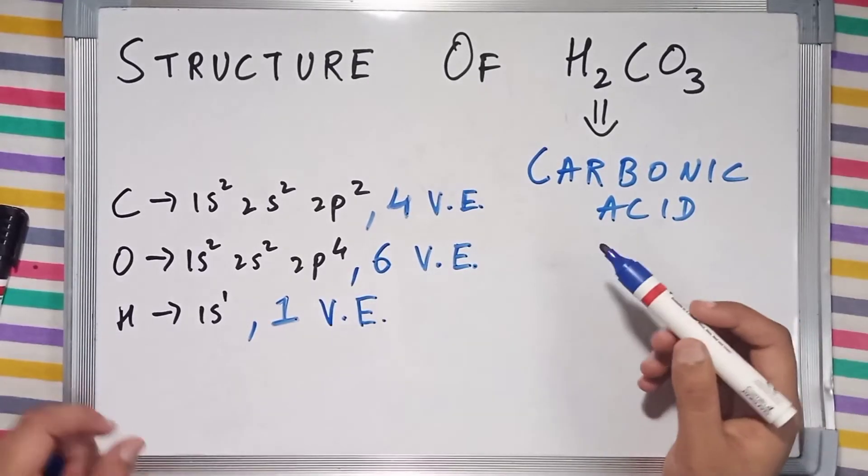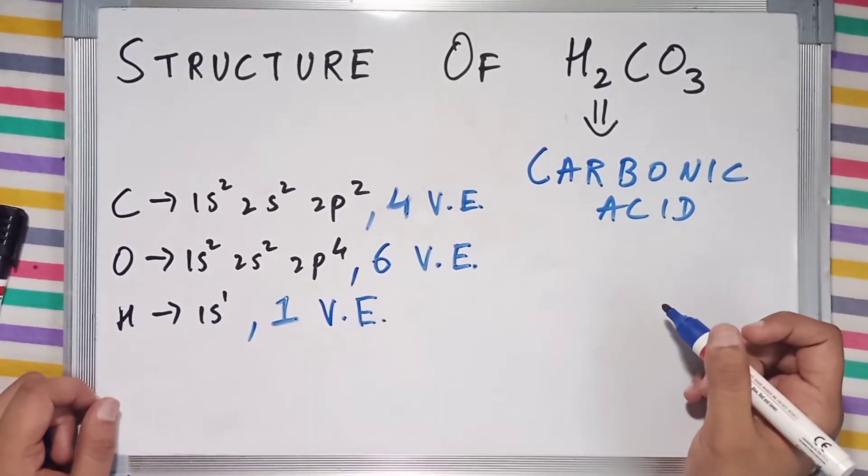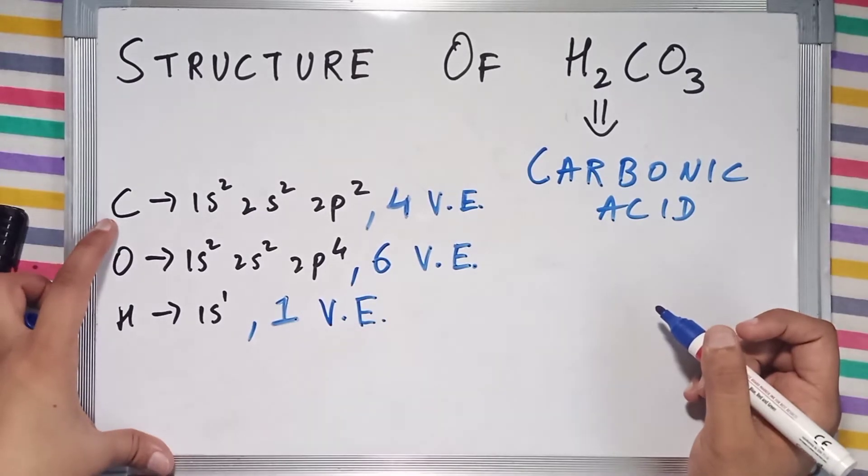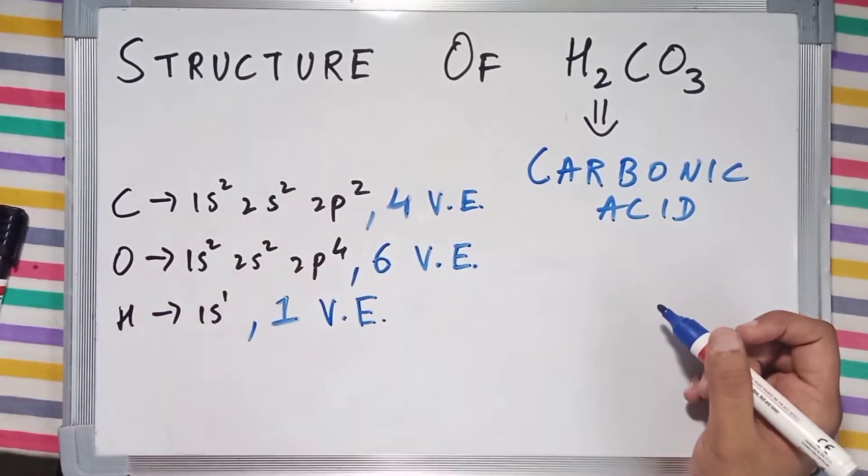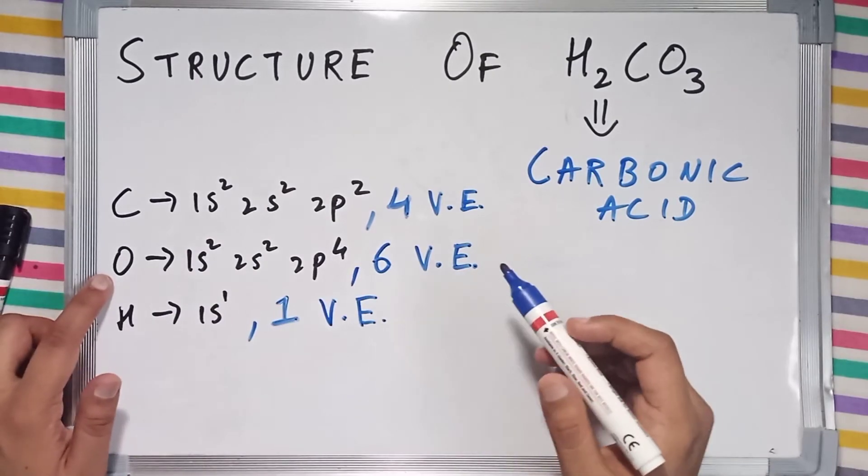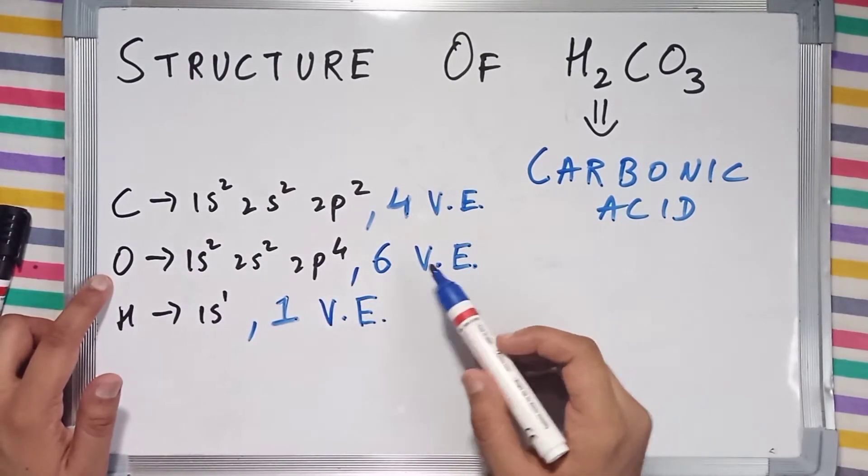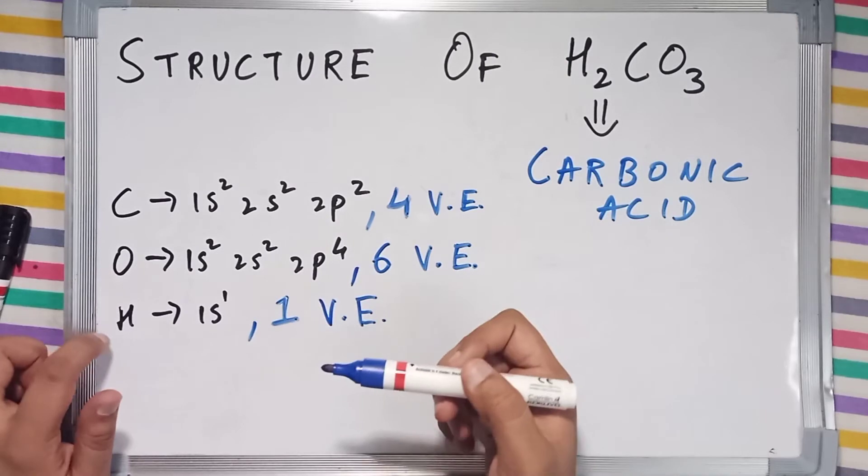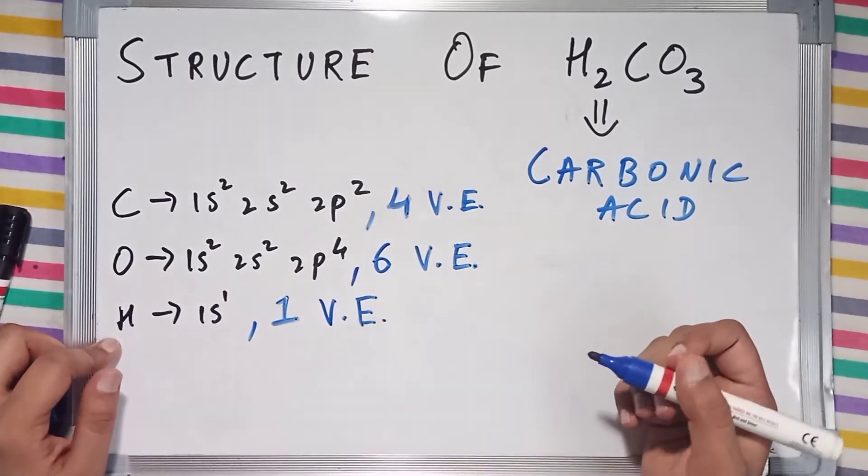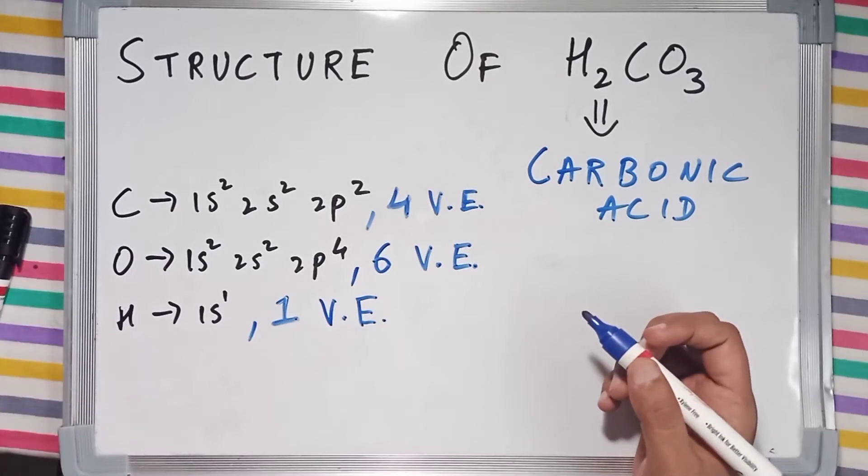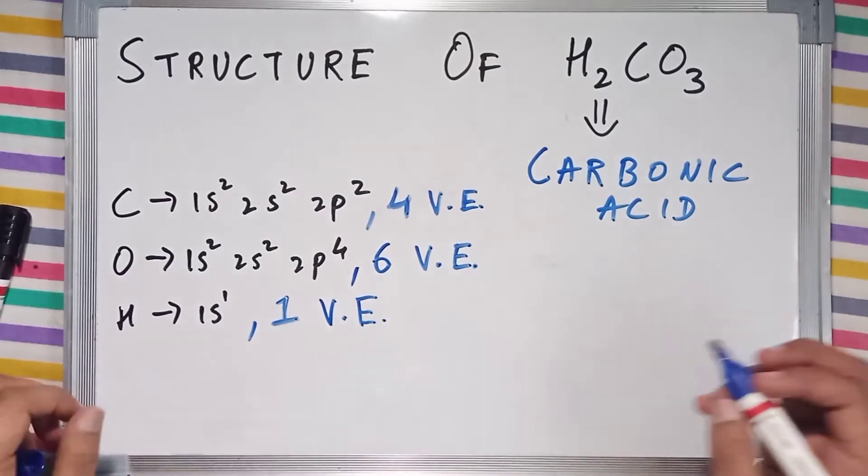We are going to draw the structure of H2CO3, which is also known as carbonic acid. Carbon has 4 valence electrons, oxygen has 6 valence electrons, but hydrogen has a single electron in its valence shell. Now let's get to the structure part.